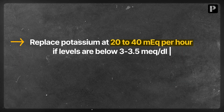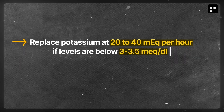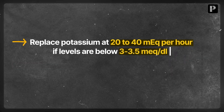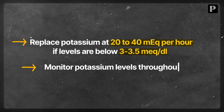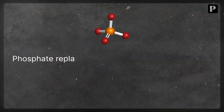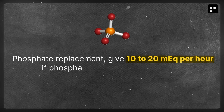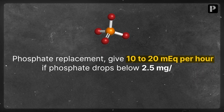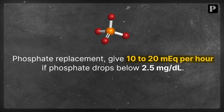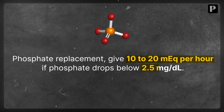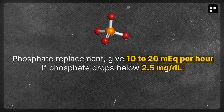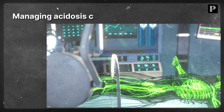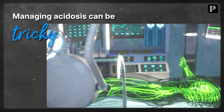Electrolyte management in DKA is crucial, particularly potassium. Replace potassium at 20 to 40 milliequivalents per hour if levels are below 3 to 3.5 milliequivalents per liter. Monitor potassium levels throughout. For phosphate replacement, give 10 to 20 milliequivalents per hour if phosphate drops below 2.5 milligrams per deciliter.